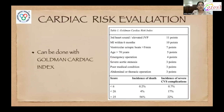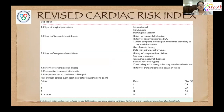Cardiac risk evaluation: initially it used to be done with the Goldman cardiac index. Now the revised cardiac risk index is commonly used for evaluation of cardiac risk in these patients. The revised cardiac risk index incorporates six independent points: high-risk surgical procedures, history of systemic heart disease, history of congestive heart failure, history of cerebrovascular disease, pre-operative treatment with insulin, and associated kidney disease with serum creatinine greater than 2 mg percent. Each risk factor is assigned one point and patients are classified into four categories.